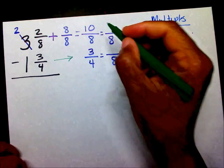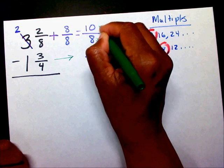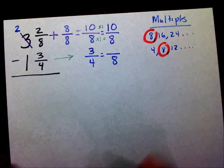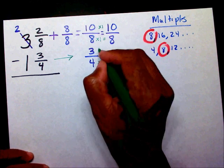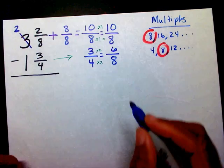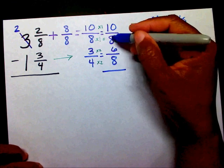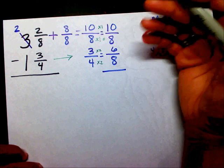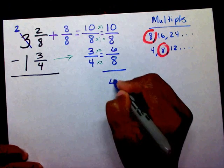Now I need to get my new numerator. I know that eight times one is eight, so ten times one is ten. I know that four times two is eight, and three times two is six. Now that I have the same denominators — eight and eight — I can subtract. Ten minus six is four eighths.